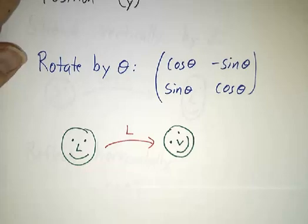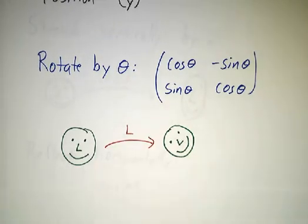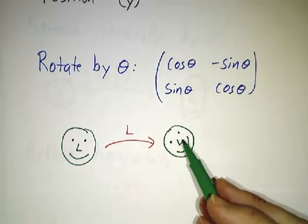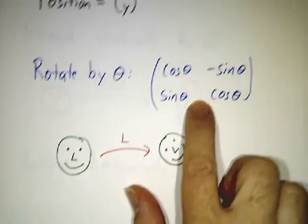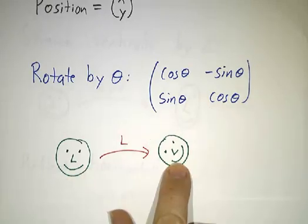And here's a picture of what happens. We're thinking of the origin as being in the middle of the nose, and you just rotate the whole thing by some angle, and the origin is still in the middle of the nose. You apply this matrix to every point in that face, and you change this face to this face.